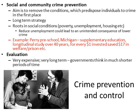Our third and final crime prevention strategy is social and community crime prevention. This aims to remove the conditions that predispose individuals to crime in the first place — very much connected to root causes such as poverty, unemployment, and housing issues. It is a very long-term strategy, because you need to invest now and the outcomes will only be visible many years down the line. For example, if you reduce unemployment in the long term, it should have the consequence of lowering crime, even though that's not specifically the intention.